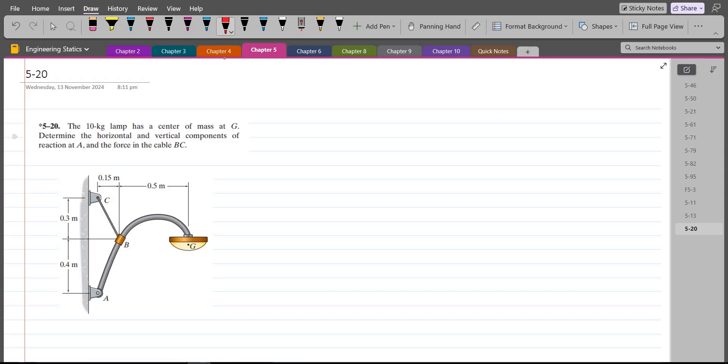According to this problem, the 10 kg lamp has a center of mass at G. Determine the horizontal and vertical components of reaction at A, and the force in the cable BC.